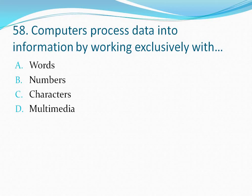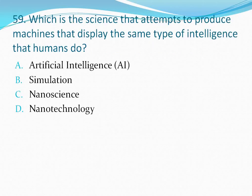Question number 58: Computers process data into information while working exclusively with — your options are: option A words, option B numbers, option C characters, option D multimedia. Computers process data into information by working exclusively with numbers, so the correct answer is option B — numbers.